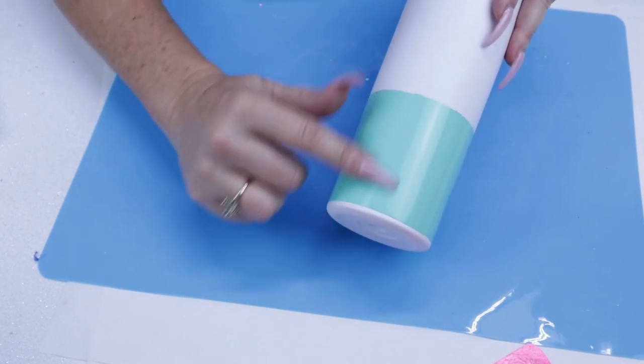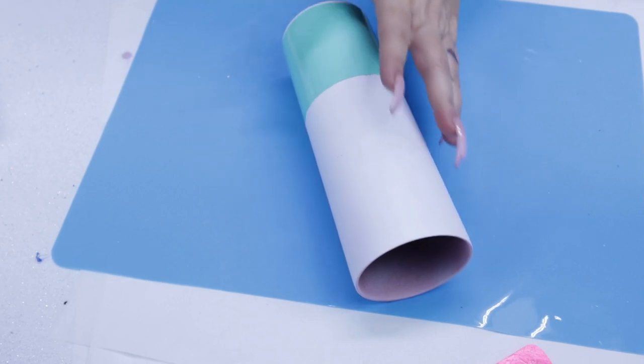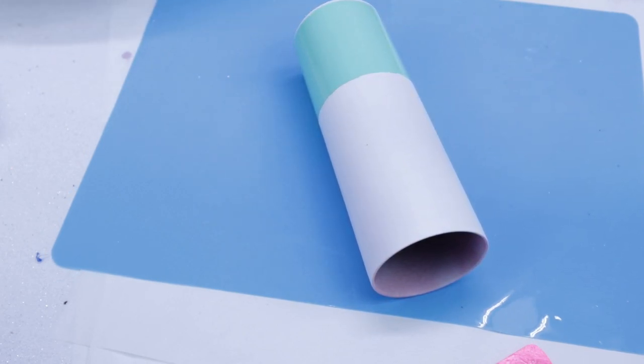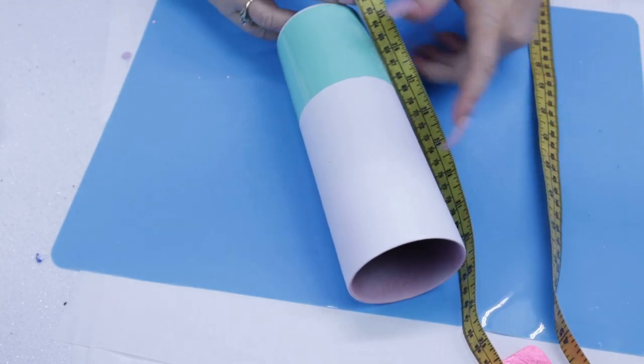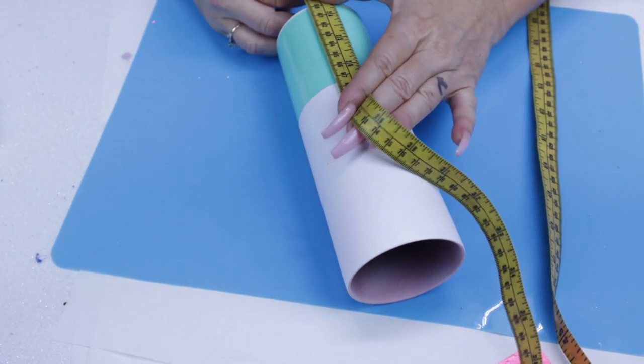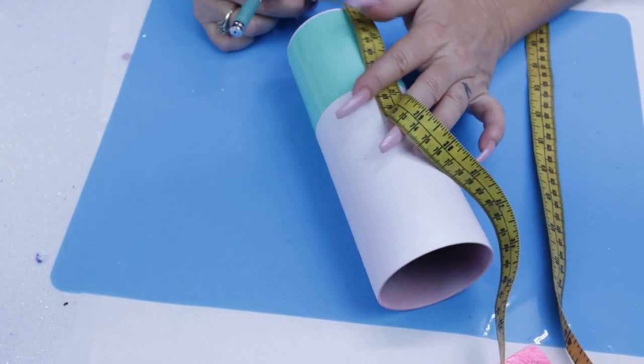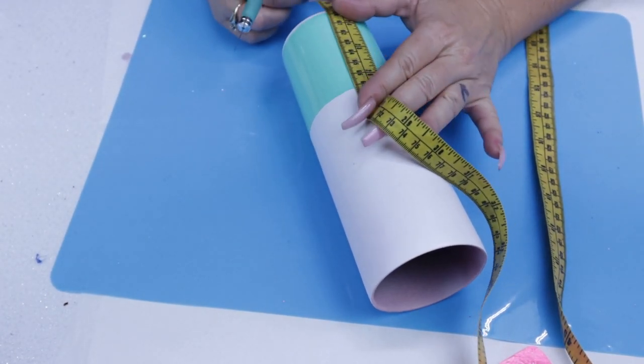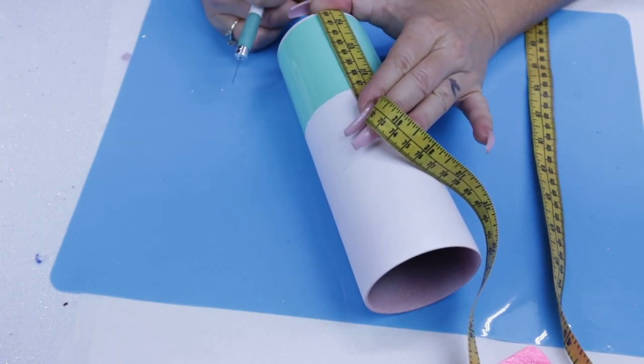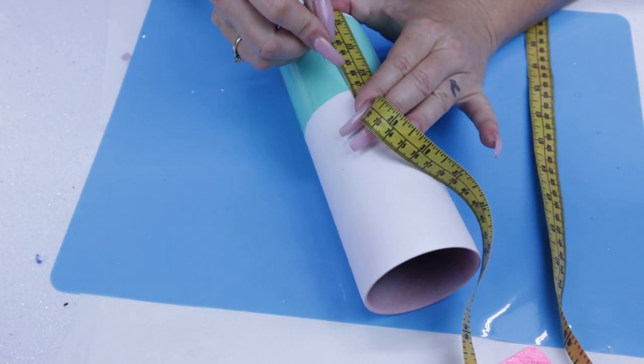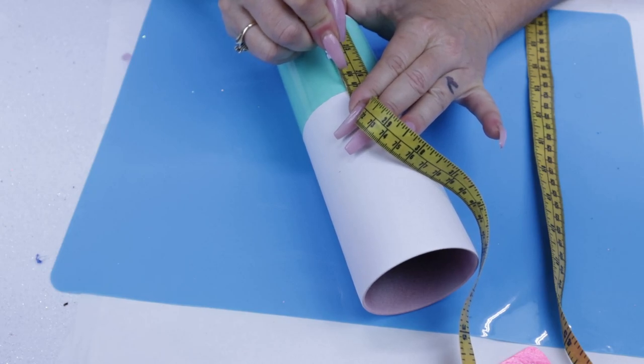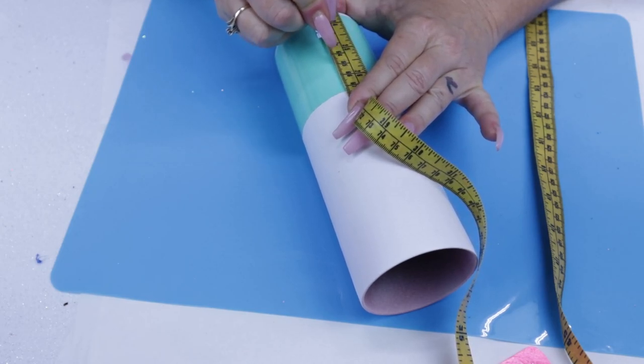Now we're going to cut the seam on the vinyl. I'm just using my measuring tape and I hold it on there and use it as my guide with my X-Acto knife to cut my seam. Take your time with this so you have a nice clean seam.